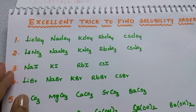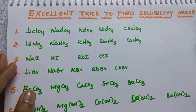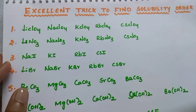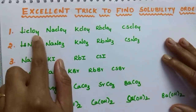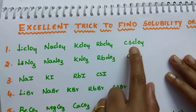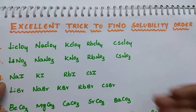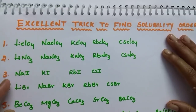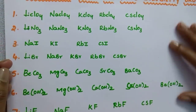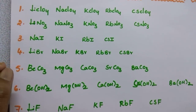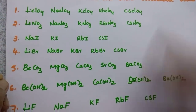Students, in today's session I am going to tell you an excellent trick to find solubility order. This trick is very useful for questions like this that appear in many of your exams — for example, finding the solubility order of LiClO₄, NaClO₄, KClO₄, RbClO₄, CsClO₄ — which one has highest solubility or lowest solubility. By the end of this video you can solve these kinds of questions very easily.